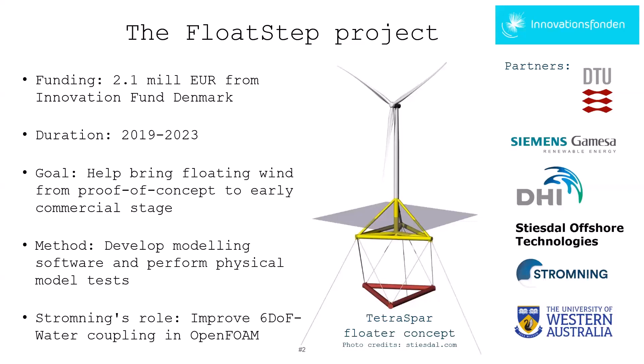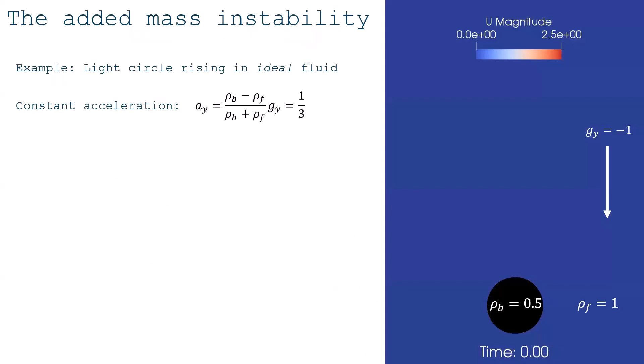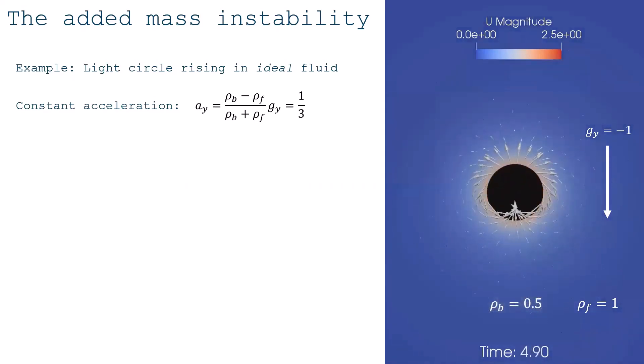And let's just jump into what this added mass instability is. So let's look at a very simple example here. Suppose we have a circular disc with density 0.5 and surrounded by a fluid which has the double density. And then we have gravity pointing downwards. Then if this is an ideal fluid and it's infinite, we can calculate quite easily that it should have a constant acceleration, which in this case should be a third. So it should steadily increase its velocity upwards like this.